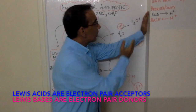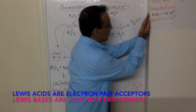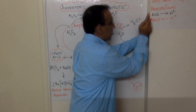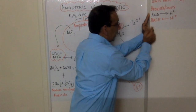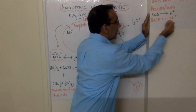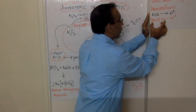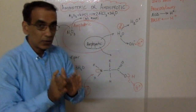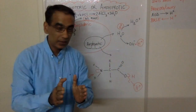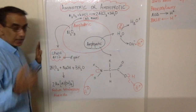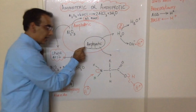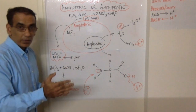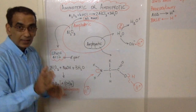Or as Brønsted-Lowry acids and bases, where an acid is a proton donor and a base is a proton acceptor. So given these two definitions, we can say that once a substance is amphiprotic, it behaves both as a proton donor (acid) and a proton acceptor (base).